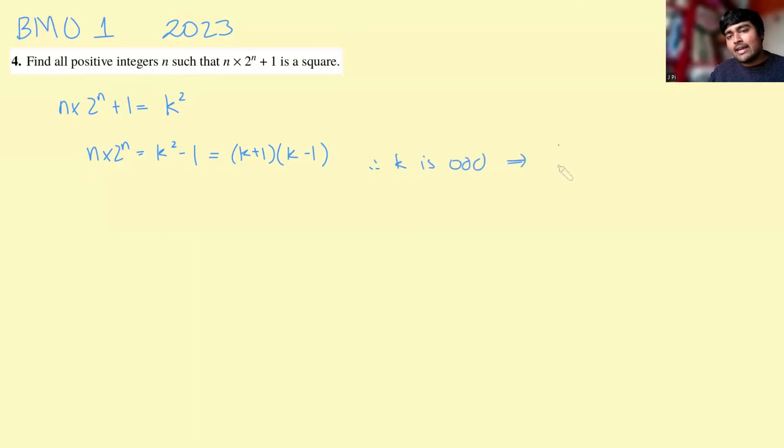and so we can write k as, let's say, 2r plus 1, where r is some integer.